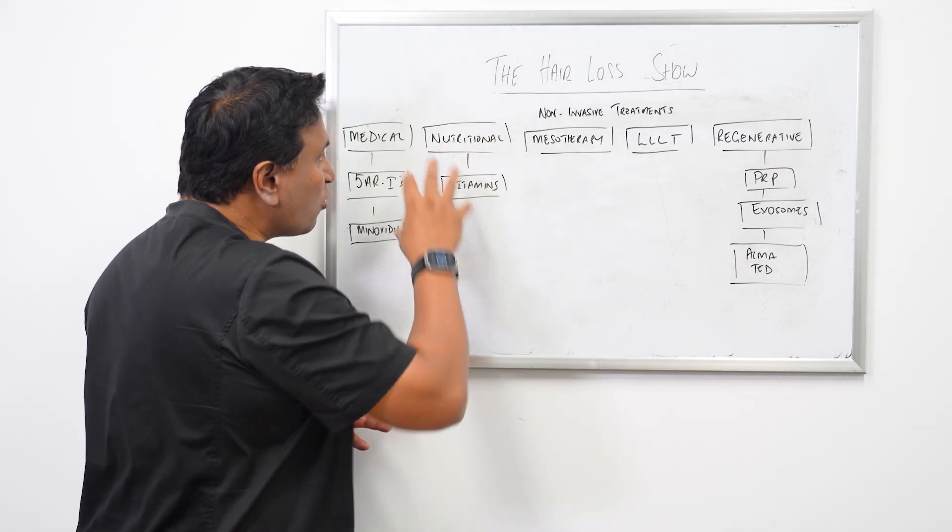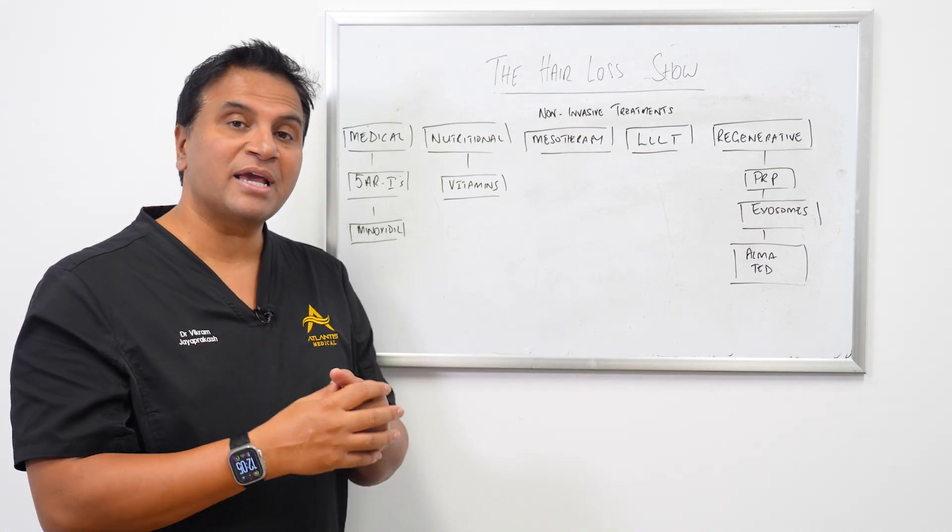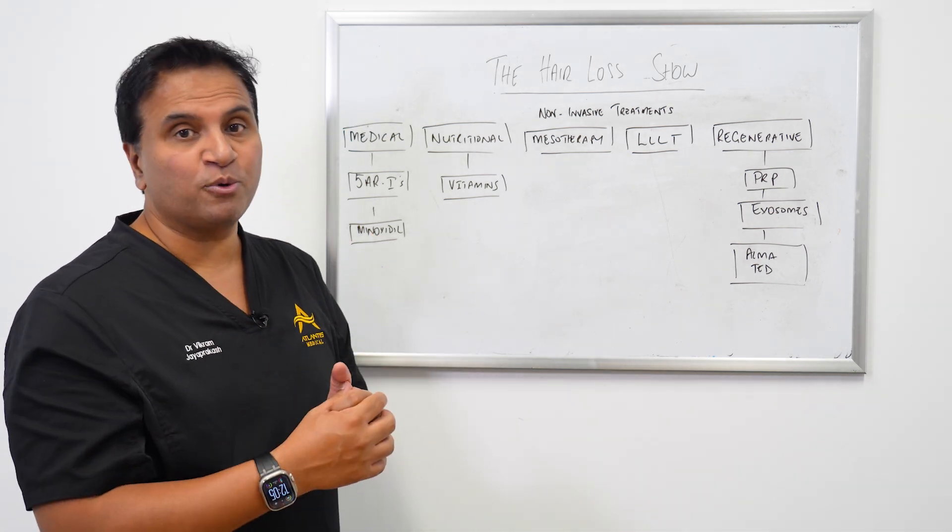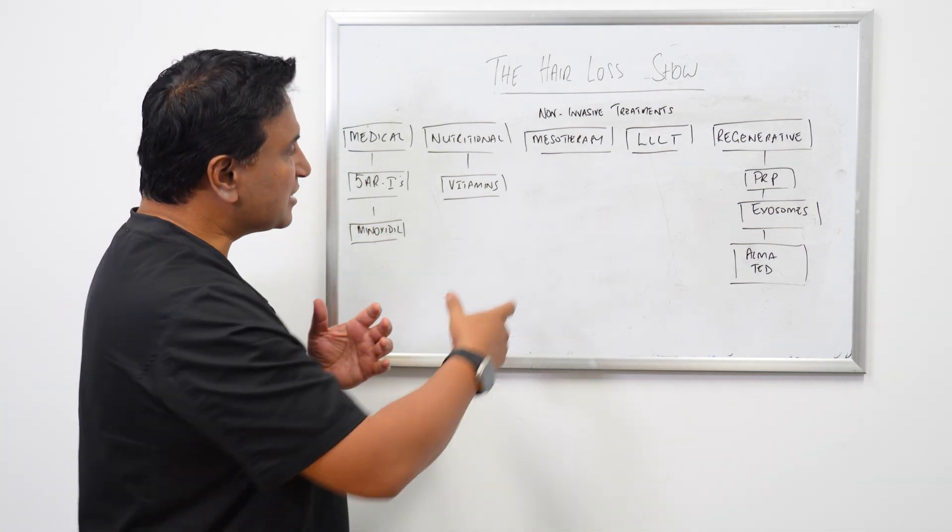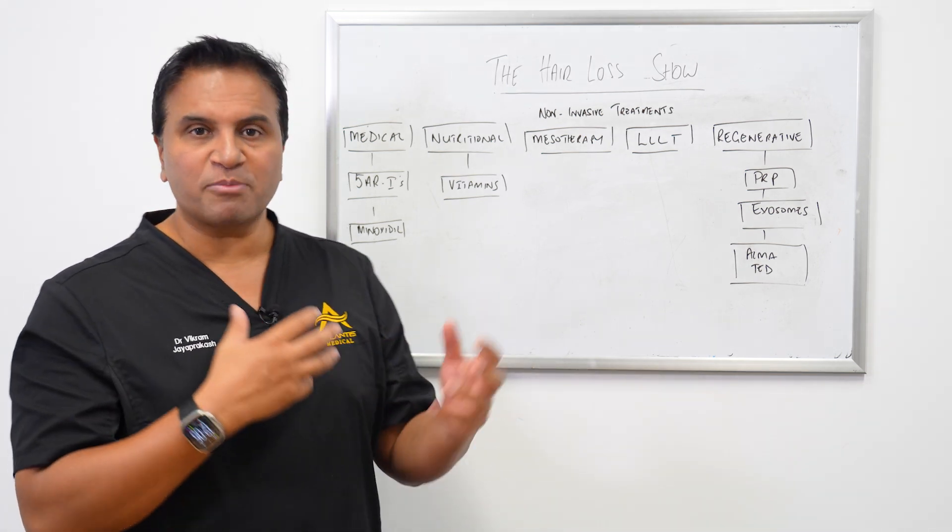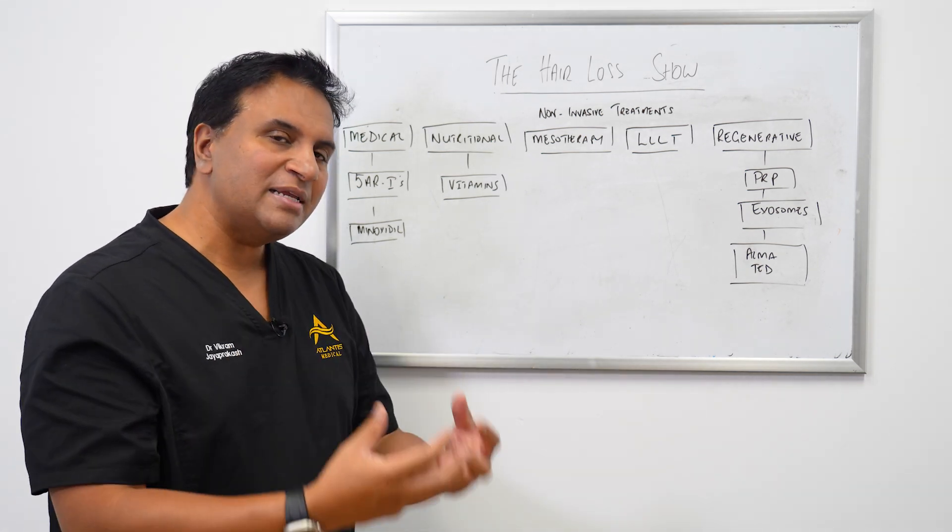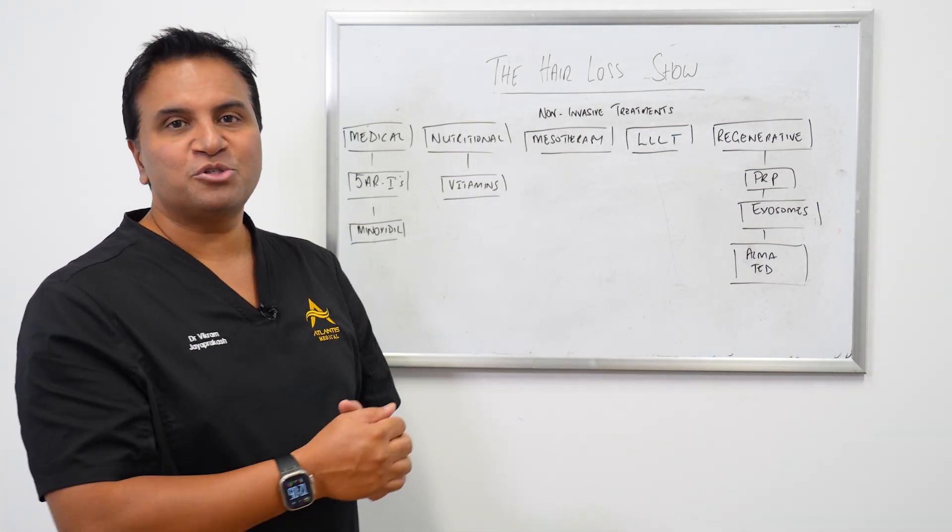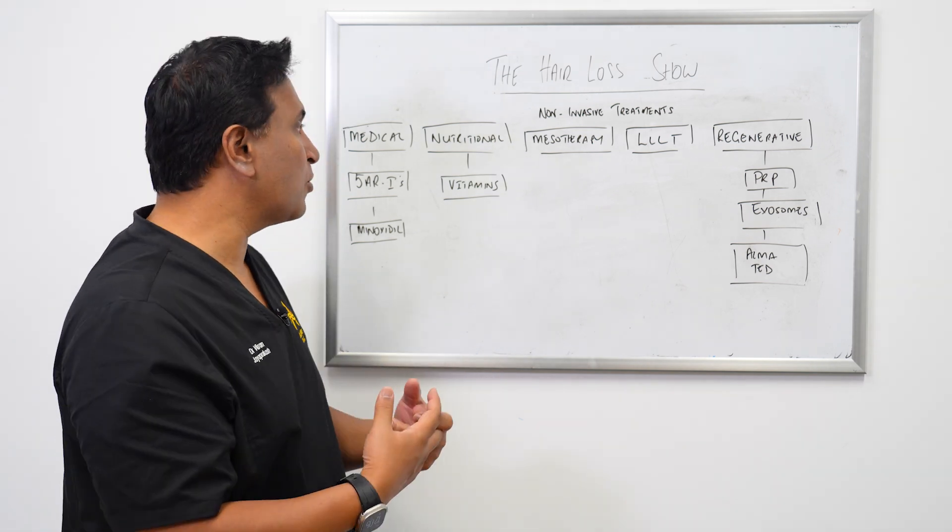Then what we should always consider is the nutritional support for the hair, and this can be in the form of vitamins. We talk about cyclical therapy, really making sure that we get those nutrients to the hair follicle to help them grow.